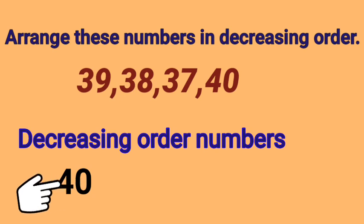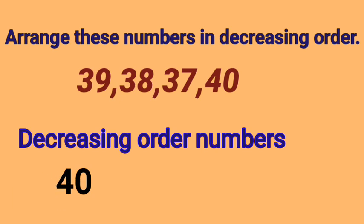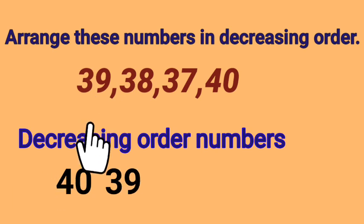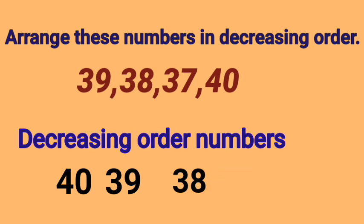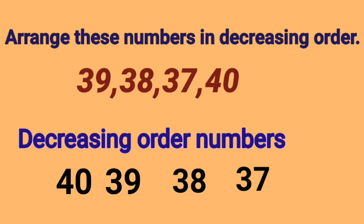40 is the biggest number — so write 40. Next, the next smaller number is 39 — so write 39. Next, the next smaller number is 38 — so write 38. Next, the smallest number is 37 — so write 37. Decreasing order — arrange and write in order. Are you clear, children?